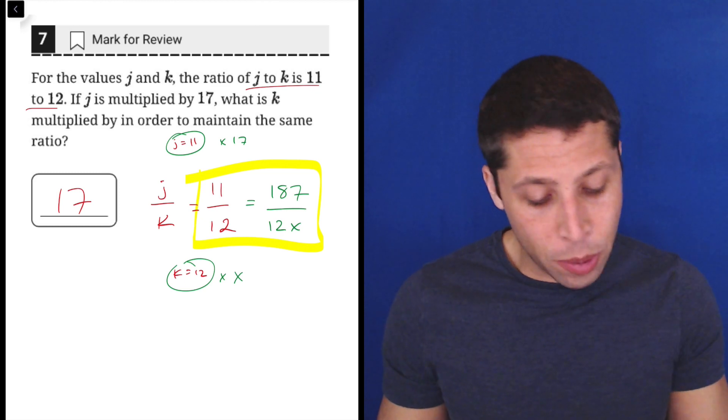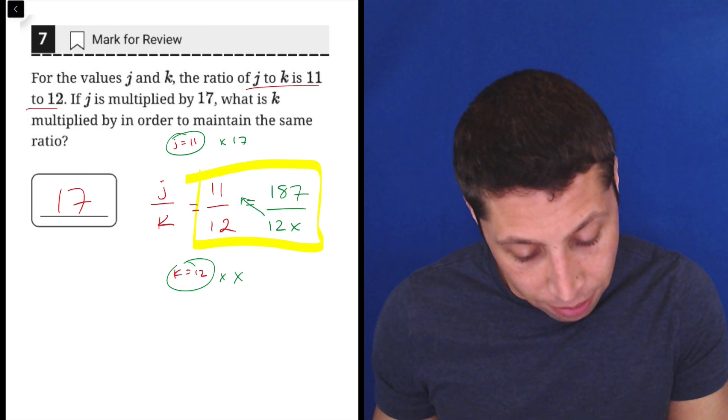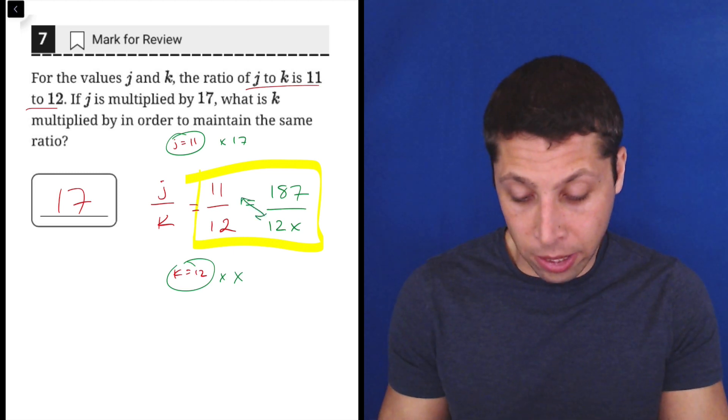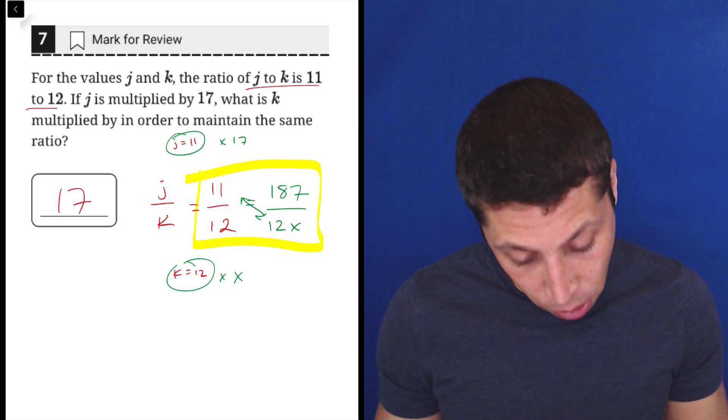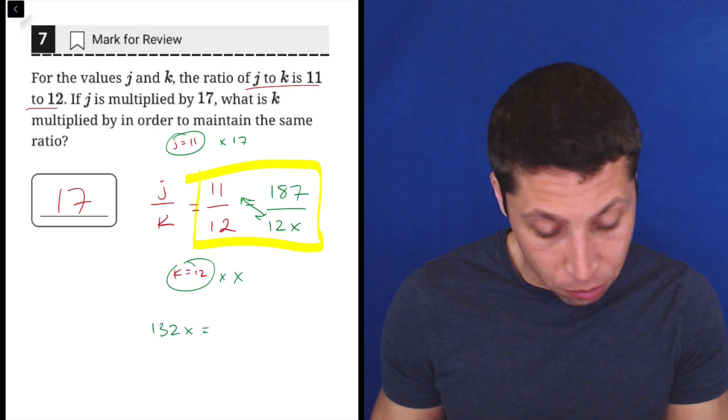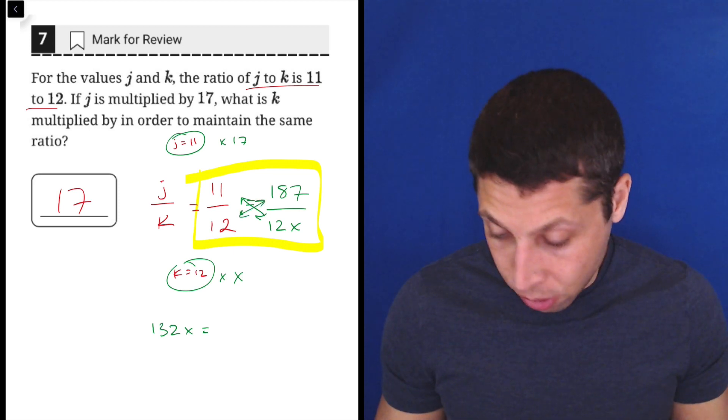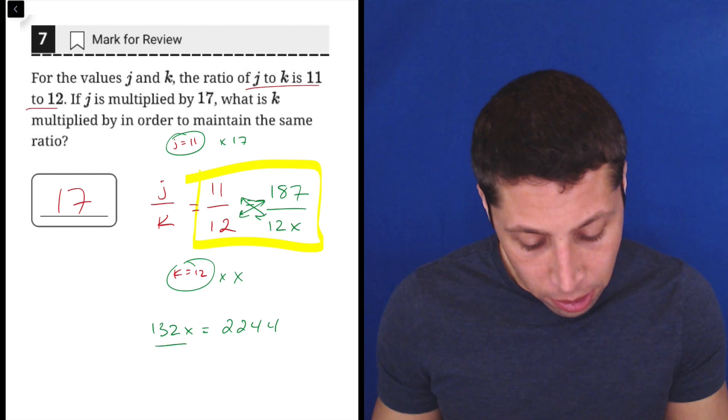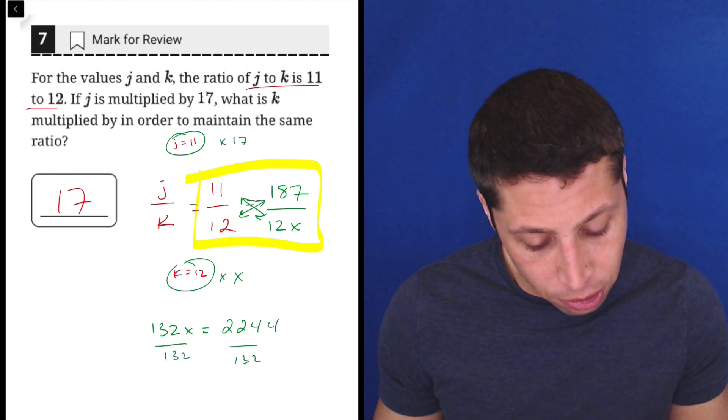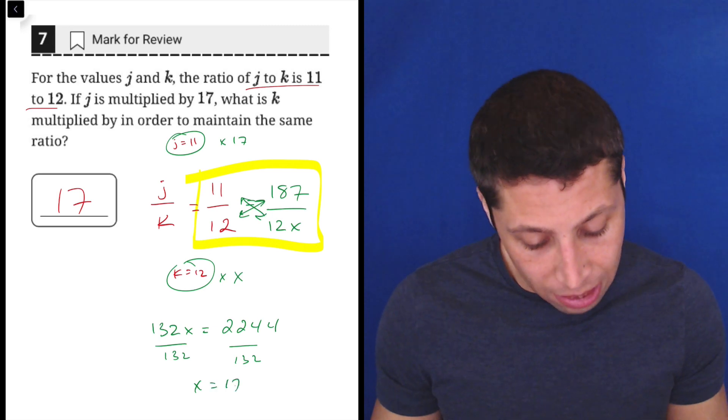And now we would just, if this were more complicated math, we would just cross multiply and divide. So I would do 11 times 12X, so 11 times 12 is 132X. And then 12 times 187, we're going to go this way, is 2244. Divide both sides by 132, and what do you know, 17. There's our proof.